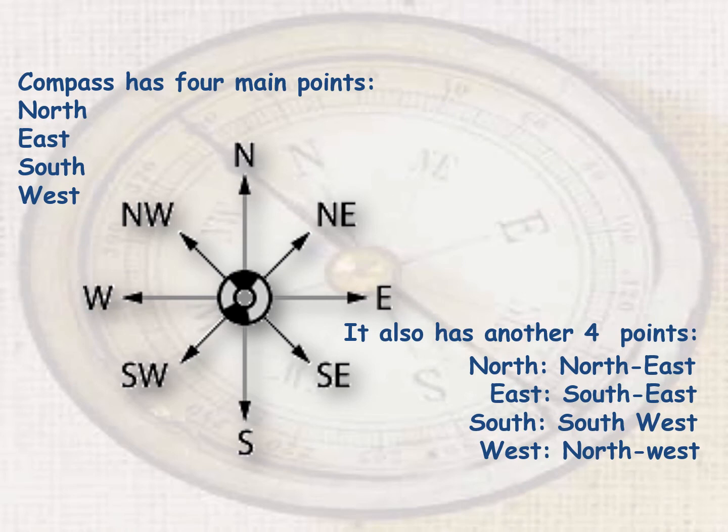As I told you, the compass shows the four main points: North, East, South and West. It also has another four points in between — North-East, South-East, South-West, and North-West — making eight points in total. If they ask you, that is how you must name them.